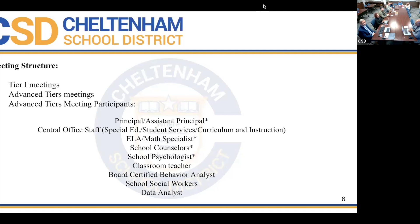As we refined our framework, we looked at our meeting structure. Last year there was no clear delineation between tier one meetings and advanced tiers meetings. This year, tier one meetings are our PLCs, kid talk meetings, and grade team meetings, where teachers discuss students showing early warning indicators and not meeting grade-level targets, putting tier one strategies in place to address any deficits.